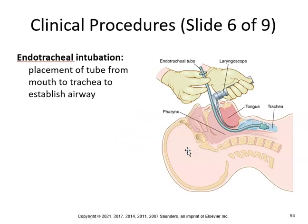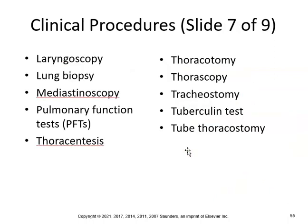Endotracheal intubation is the placement of a tube from the mouth to the trachea to establish an airway. Other procedures include laryngoscopy, lung biopsy, mediastinoscopy, pulmonary function tests, thoracentesis, thoracotomy, thoracoscopy, tracheostomy, tuberculin test, and tube thoracostomy.